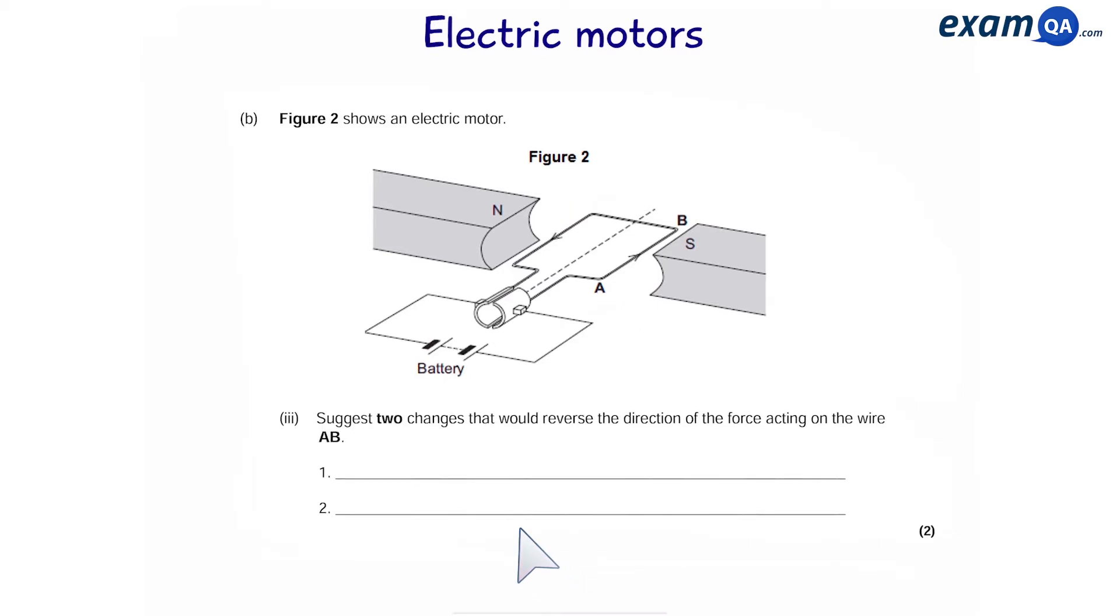Suggest two changes that would reverse the direction of the force acting on the wire AB. So at the moment, the wires are going this way. The one on the left is going up, and the one on the right, AB, is going down.